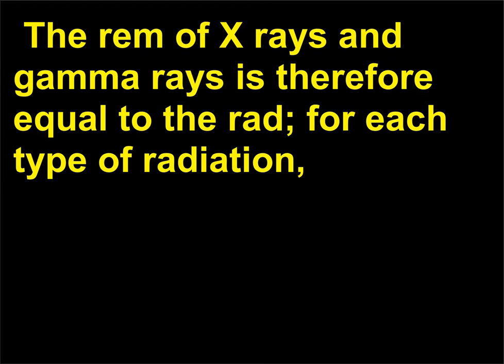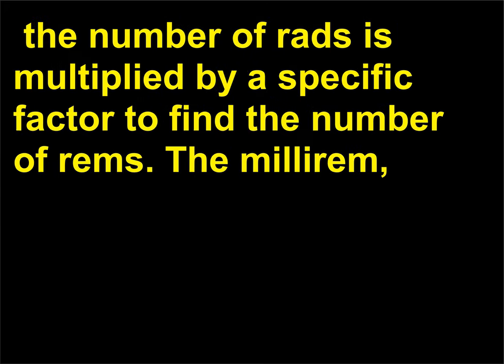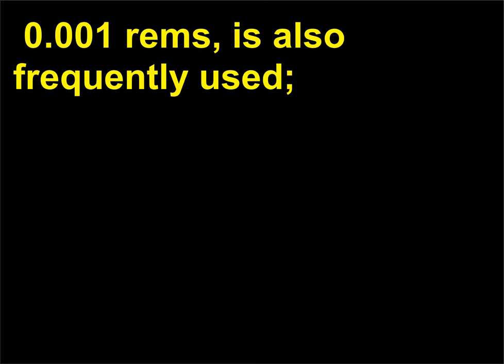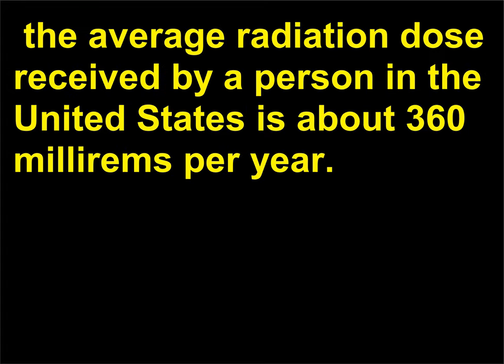The rem of X-rays and gamma rays is therefore equal to the rad for each type of radiation. The number of rads is multiplied by a specific factor to find the number of rems. The millirem (0.001 rems) is also frequently used. The average radiation dose received by a person in the United States is about 360 millirems per year.